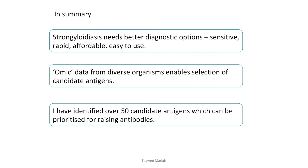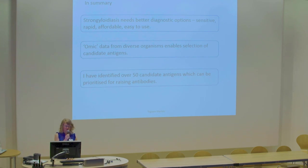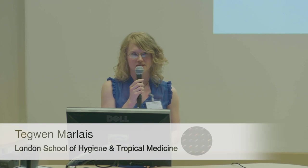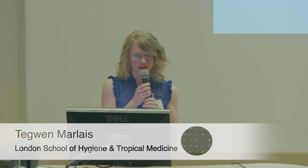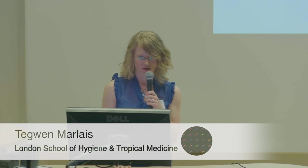To summarize: Strongyloides definitely needs better diagnostic options — they need to be sensitive, rapid, affordable, easy to use, and ideally field applicable. I've used omic data, and there's a great wealth of omic data from diverse organisms. To do this analysis I didn't just use Strongyloides data — it came from all sorts of helminths and human data as well. I've identified over 50 candidate antigens this way, which I'm now prioritizing, and they can be used to raise antibodies to develop a test.